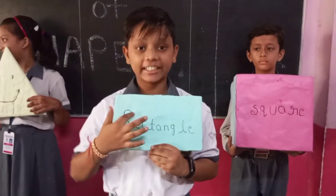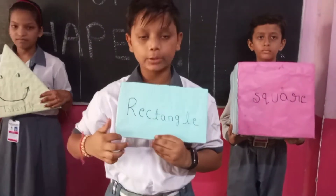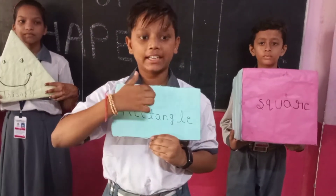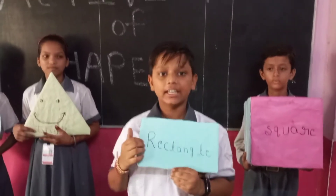I am a rectangle. I have four sides. I have four corners. There are two big sides and there are two small sides.